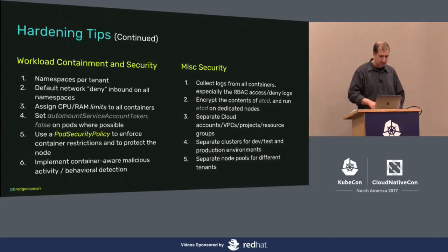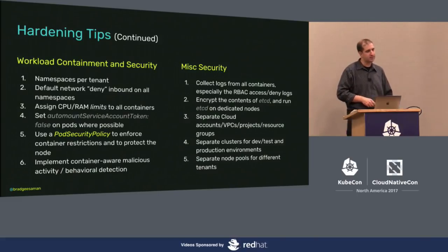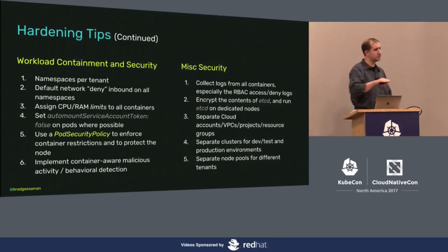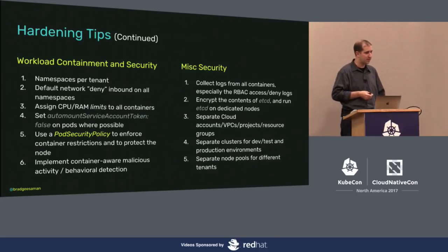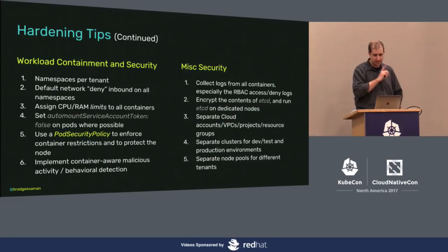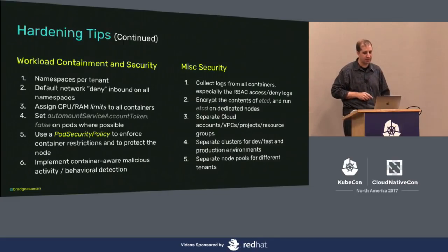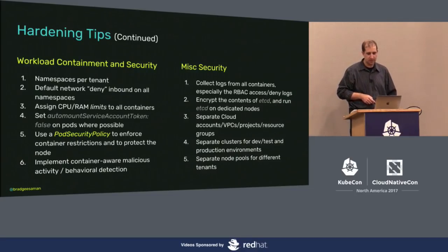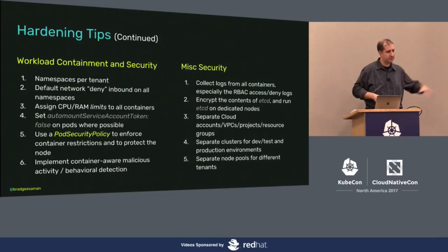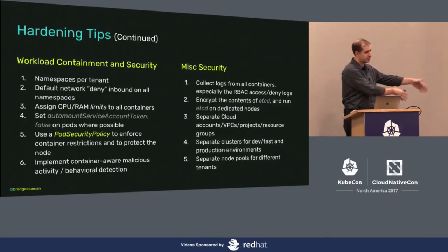Container-aware malicious activity and behavioral detection capabilities are incredibly important for stopping the initial attack right where it started. At the syscall level, a shell cannot happen, a curl cannot be downloaded or executed — you stop it right then and there. Also: separate cloud accounts, projects, or resource groups for different workloads or different clusters. A one-to-one mapping is safe for now — there are too many ways to hop across. Don't run dev and test workloads in the same place as production. Depending on regulatory requirements, use separate node pools for separate workloads using annotations to make sure sensitive stuff happens in one place and non-sensitive stuff in another.